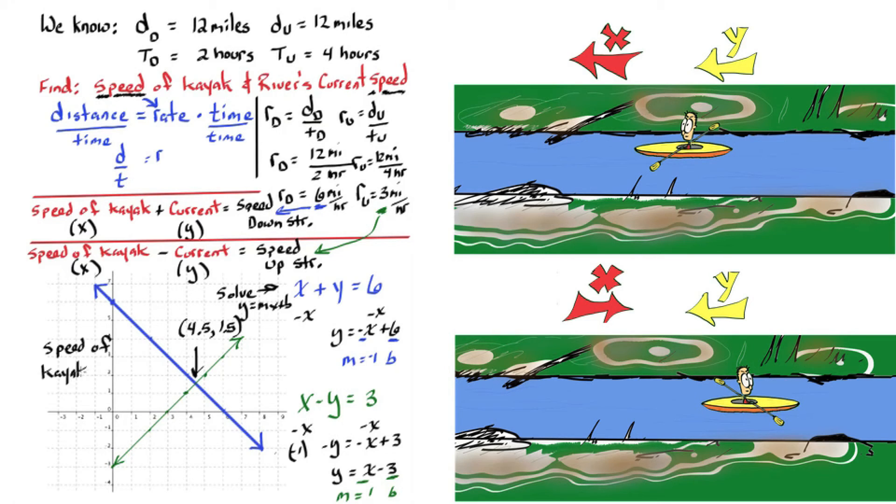So the speed of the kayak is 4.5 miles per hour, and the speed of the river current is 1.5 miles per hour.